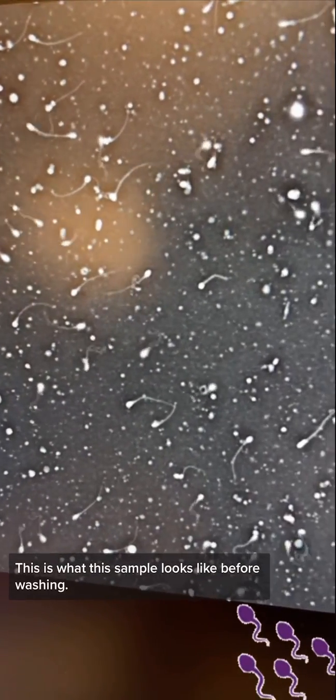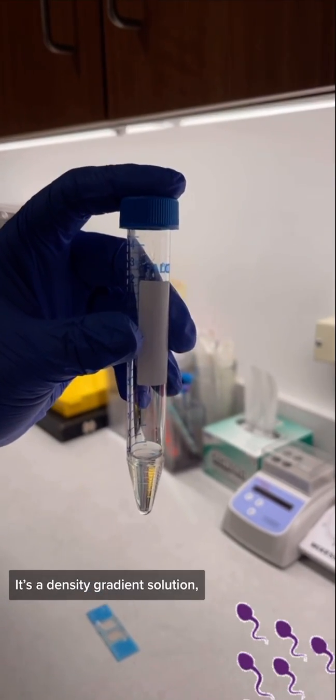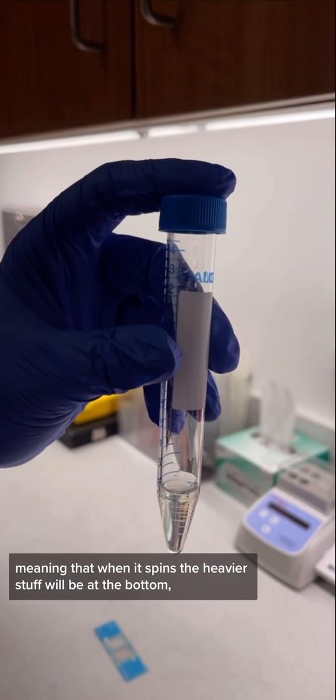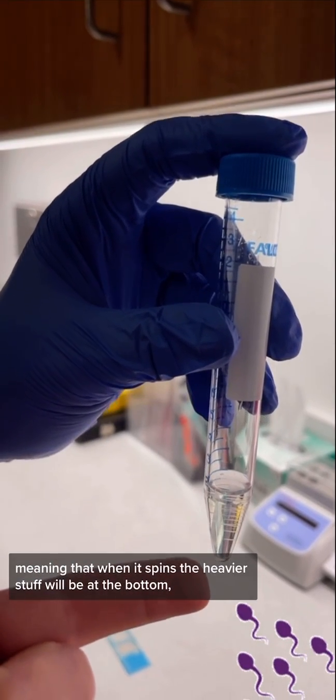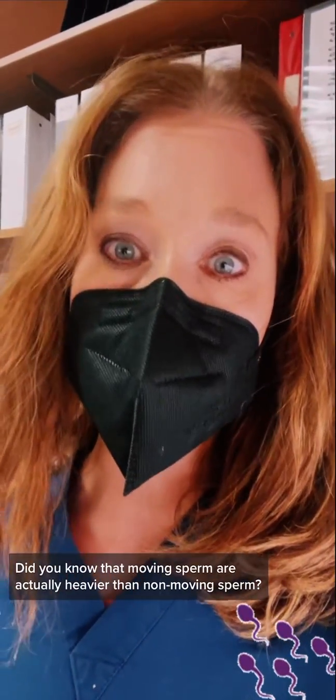This is what the sample looked like before washing. This is called isolate. It's a density gradient solution, meaning that when it spins, the heavier stuff will be at the bottom, the lighter stuff will be at the top. Did you know that moving sperm are actually heavier than non-moving sperm?